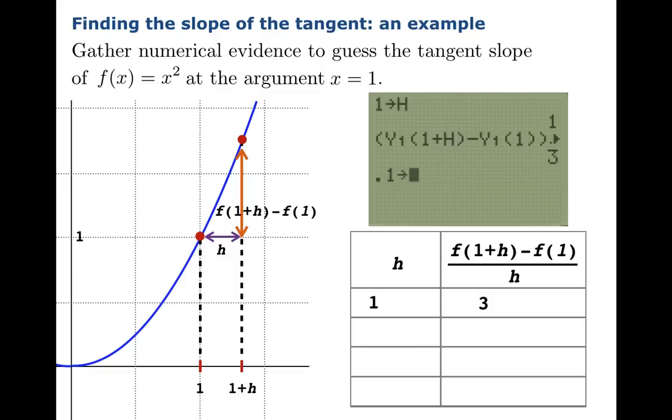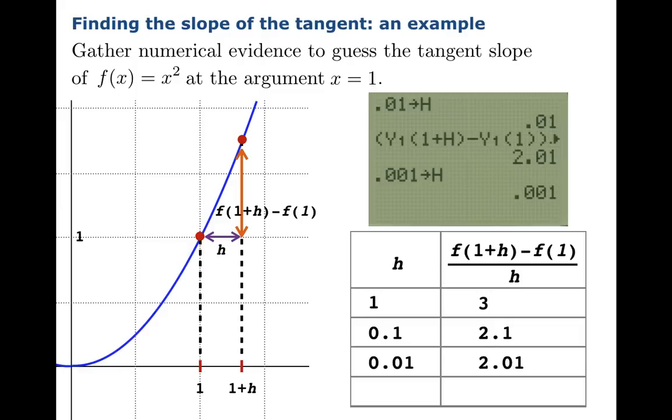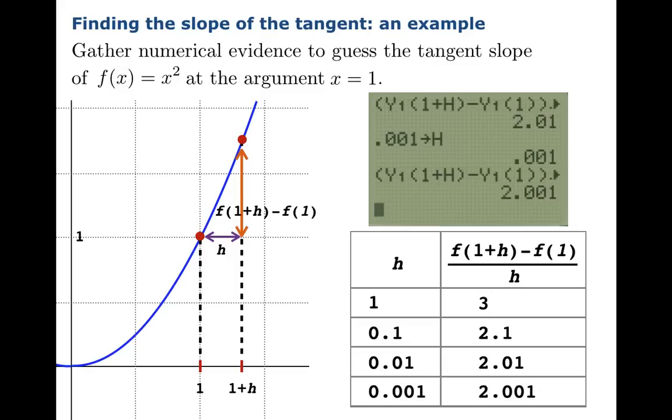Here's our secant slope when h is 1. The secant slope is 3 when we go from 1 to 2. Now we're going to try 0.1 into h and hit second enter to recover that calculation. By letting h be 0.1, we've calculated the secant slope to be 2.1. We can enter 0.01 for h, redo the calculation, and there's our secant slope of 2.01. And one last time, 0.001 into h, hit second enter to recover our calculation. And perhaps not shockingly, we get 2.001.